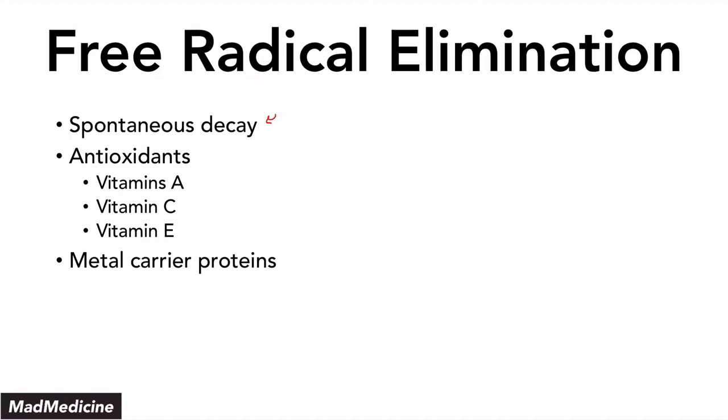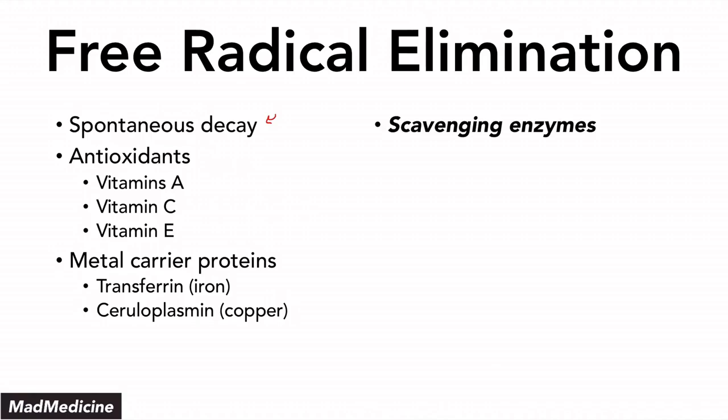Metal carrier proteins can definitely reduce free radical production. This is going to be transferrin, which is the iron carrier protein, and ceruloplasmin, which is the copper carrier protein. And then finally, you have scavenging enzymes — this is probably the most important thing you need to remember for any exam that deals with free radicals and free radical injury.